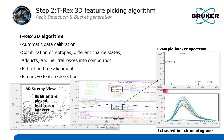MetaboScape also performs retention time alignment, so if there are compounds in your sample that do not behave well in chromatography, MetaboScape can handle this. It will also apply a recursive feature extraction, which I will show on the next slide.